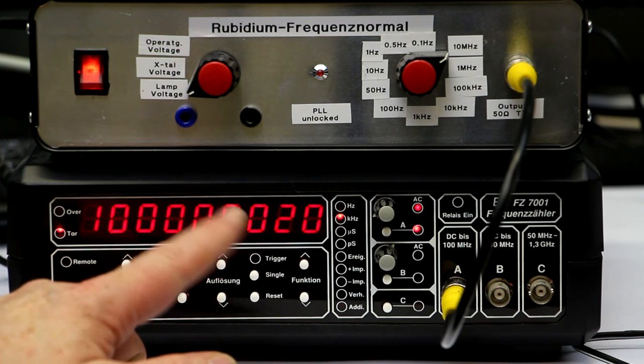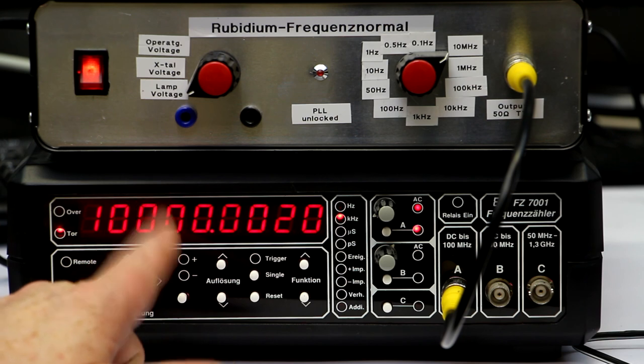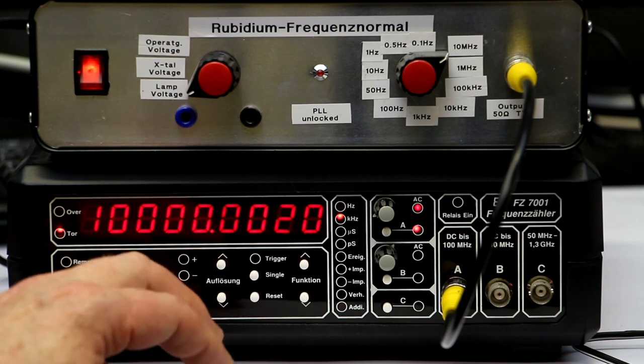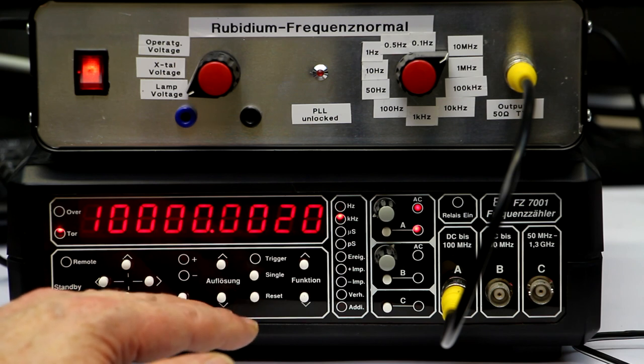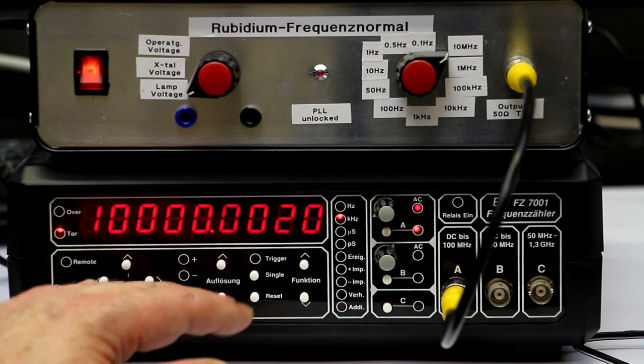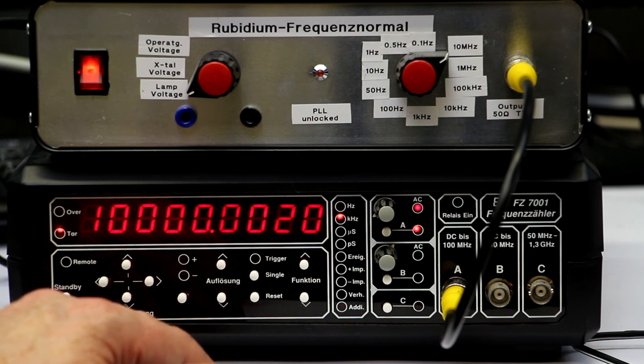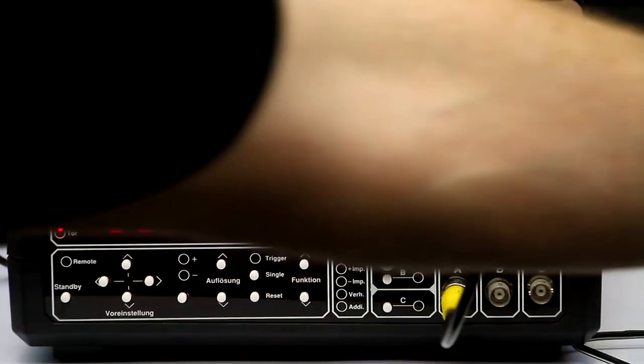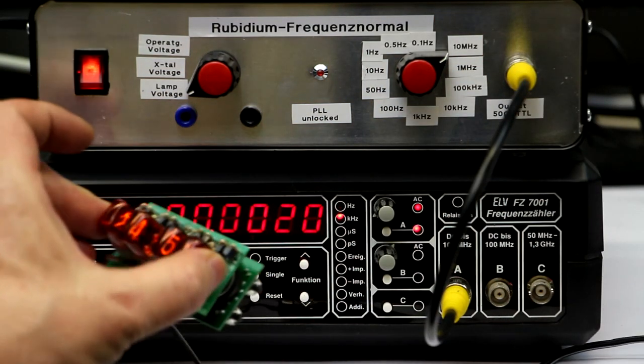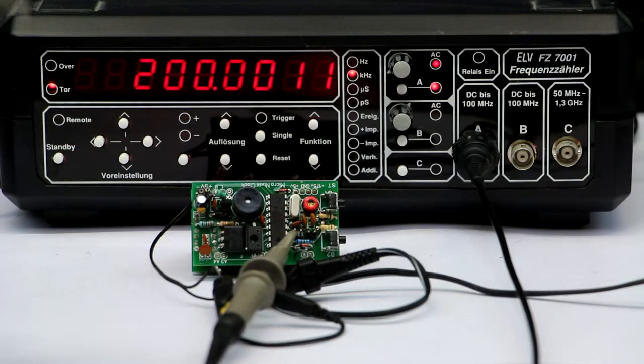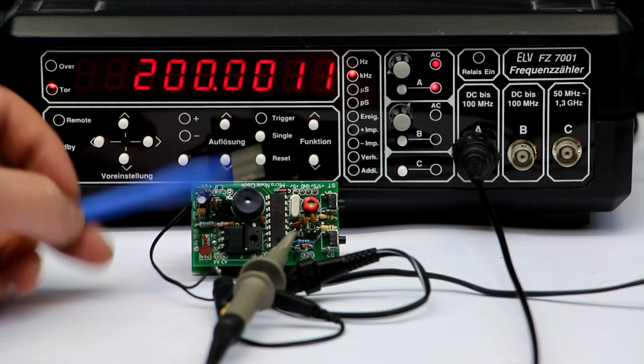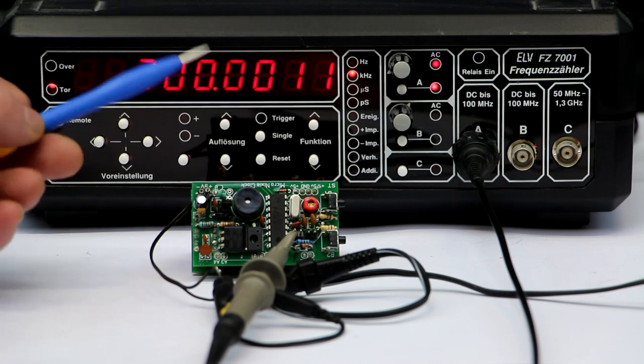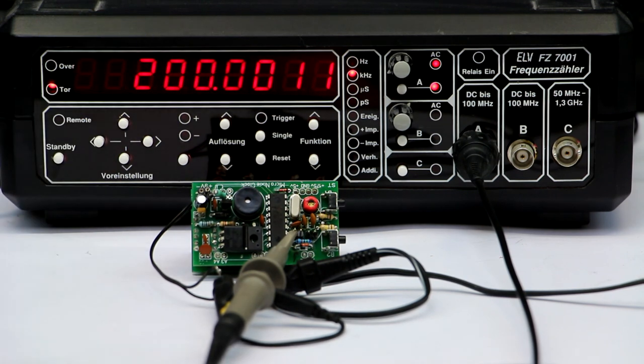This is anyway absolutely sufficient in accuracy to check the accuracy of a quartz used in a clock, because it makes no sense to try to adjust the clock quartz to better than one ppm accuracy because the temperature drift is usually much larger than one ppm per degree Celsius or per Kelvin. So let's change over to our little Nixie display, our Nixie clock, and adjust the frequency here.